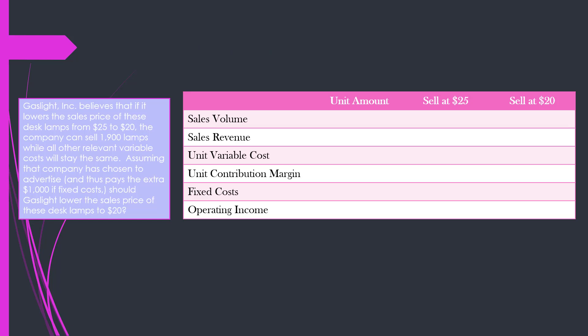Let's find out what our unit amounts are now. For sales revenue we have two options: sell at $25 or sell at $20. Regardless of which price we sell for, our unit variable cost is still going to be $15. So if we sell at $25 with a unit variable cost of $15, our contribution margin is $10. But if we sell at $20 with a unit variable cost of $15, our contribution margin drops down to $5. We are committed to paying the $3,000 in total fixed costs from before, since we are going to advertise under both alternatives.